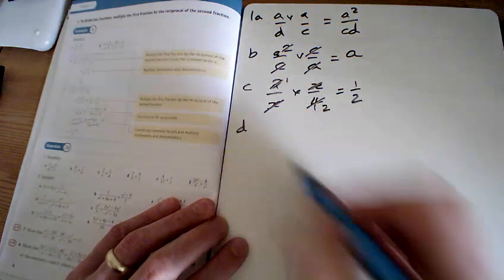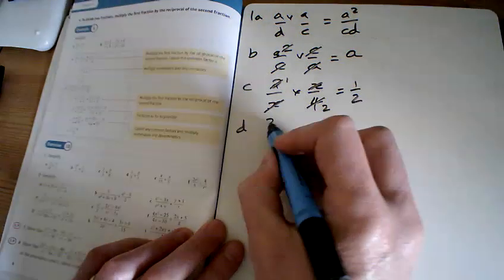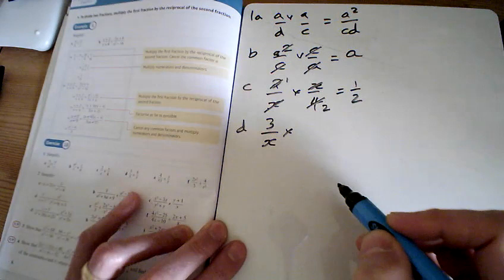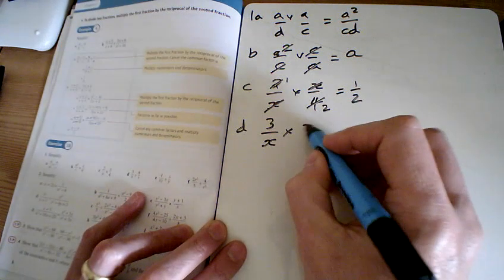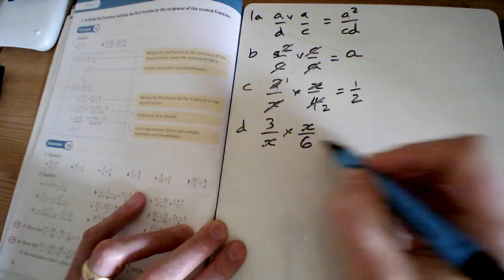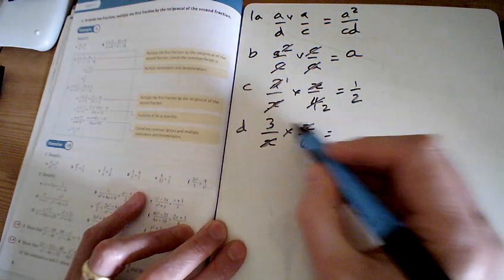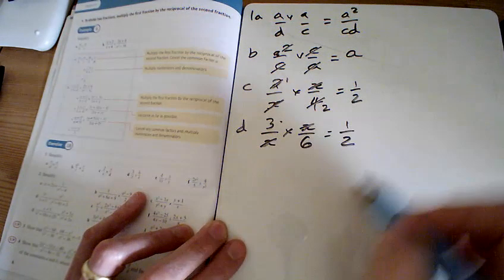Part d, it's a divide. First thing I'm going to do with the divide is I'm going to multiply by the reciprocal of the second one. So I've got x over 6 here. And look, the x's cancel, 3 over 6 is another half.